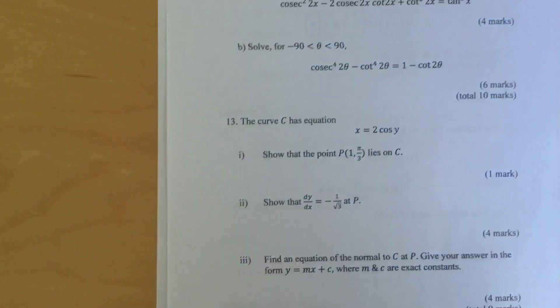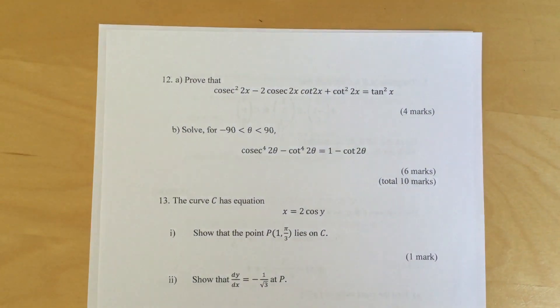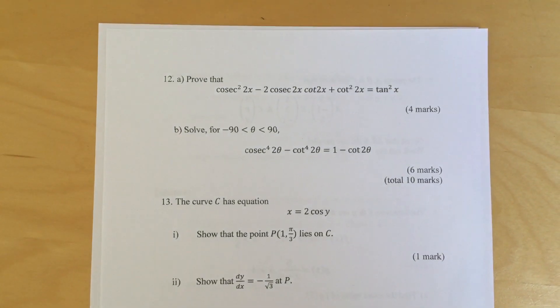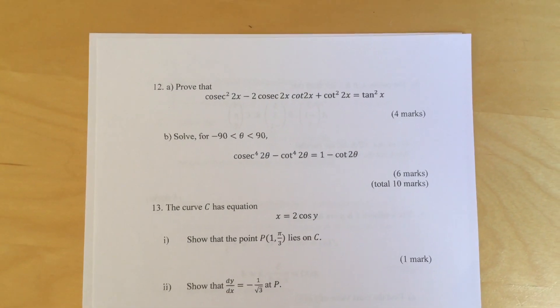Question 12 Part a: Prove that cos squared 2x minus 2 cos 2x cot 2x plus cot squared 2x equals tan squared x.